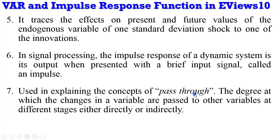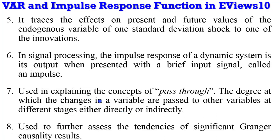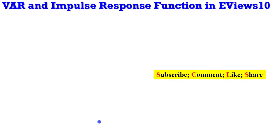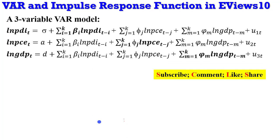Pass-through refers to the degree to which changes in a variable are passed to other variables at different stages, either directly or indirectly. The impulse response can also be used to further assess the tendencies of significant Granger causality relationships in a given model.